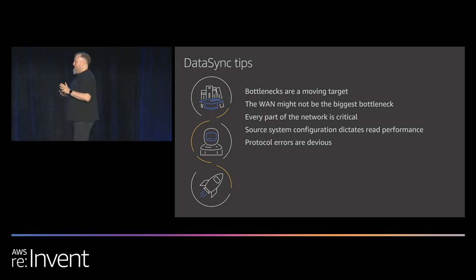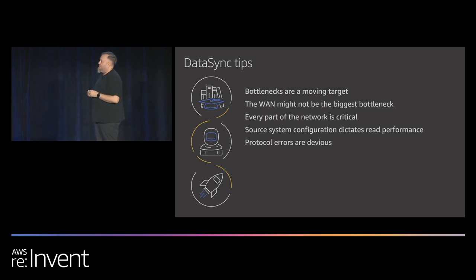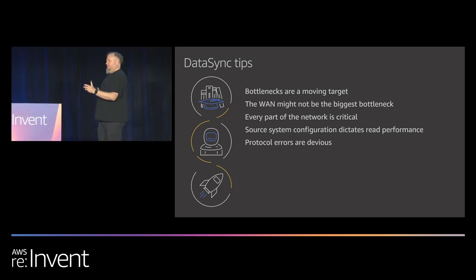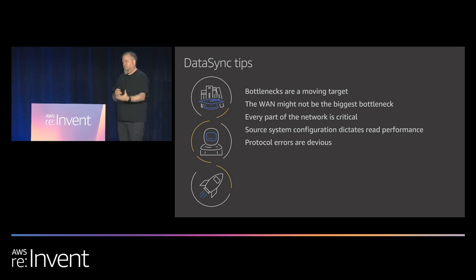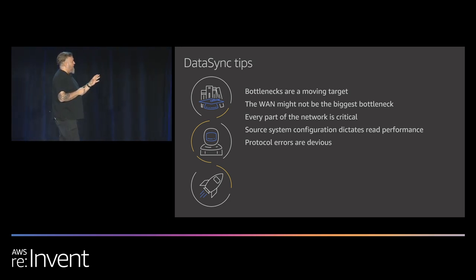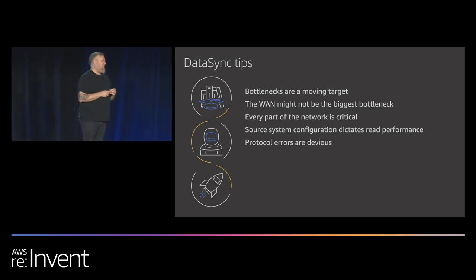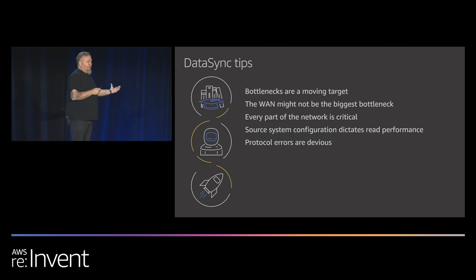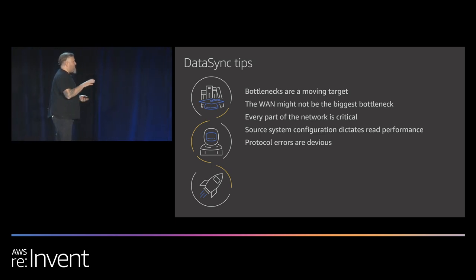A couple of tips about DataSync. First, bottlenecks are a moving target. When moving large amounts of data at very high speeds — say petabytes at 10 gigabits per second, which is 100 terabytes per day — the bottleneck keeps shifting. It's probably not going to be the WAN if you have a 10-gig Direct Connect. The bottleneck moves into storage, into clients, into the LAN. You're always chasing it to make things as fast as possible.